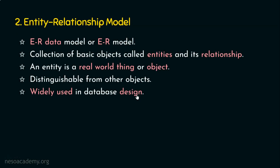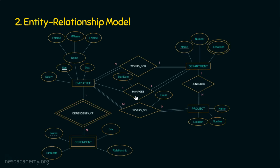Here is an example of an ER model. Everything is referred to as an entity: employee is an entity, dependent is an entity, project and department are entities. Each entity is described by some attributes — salary, SSN, name, gender or sex. The name attribute has three sub-attributes: first name, middle name, and last name. This ER model is a schematic or diagrammatic representation, so that it can be used for designing the database.